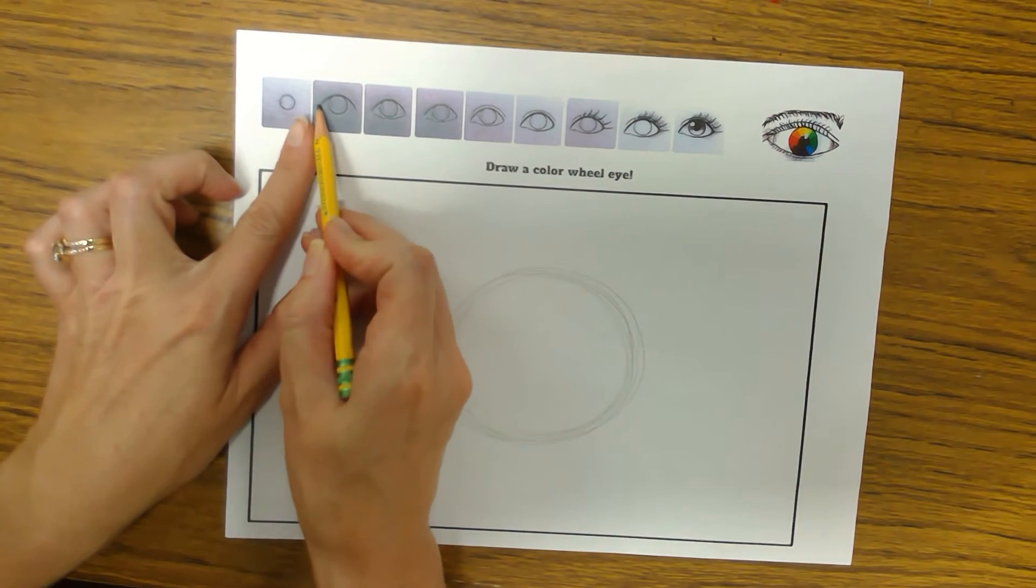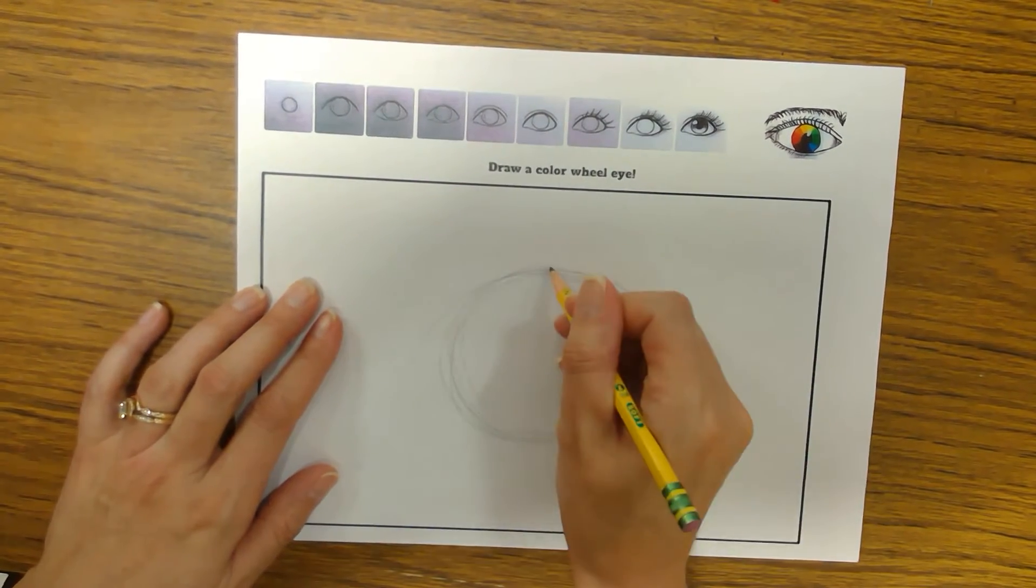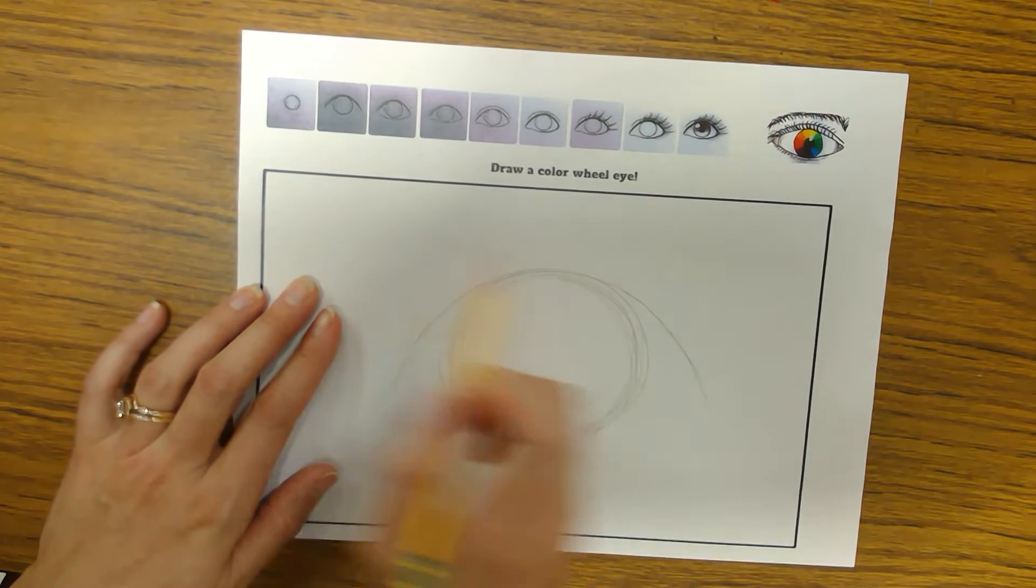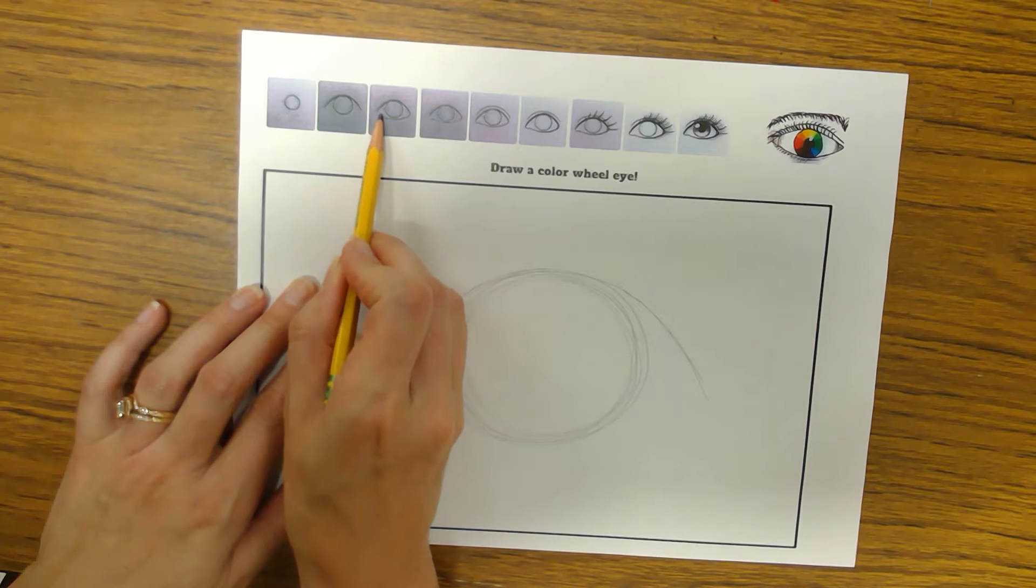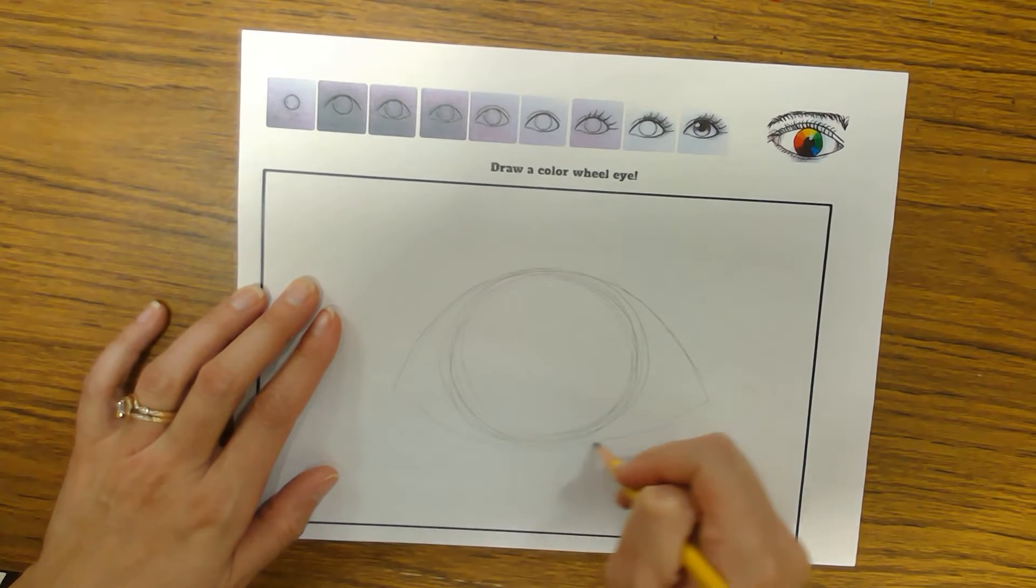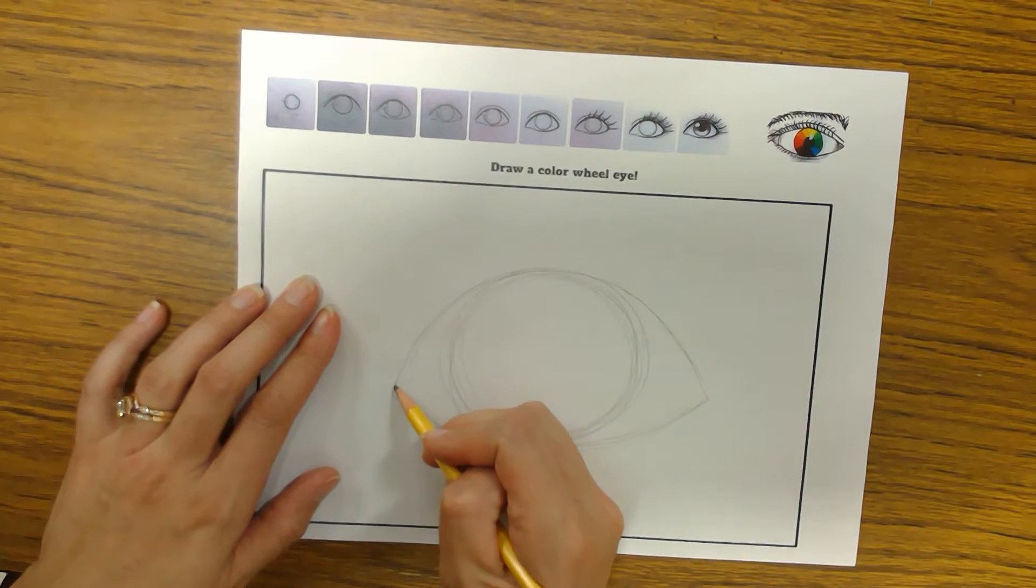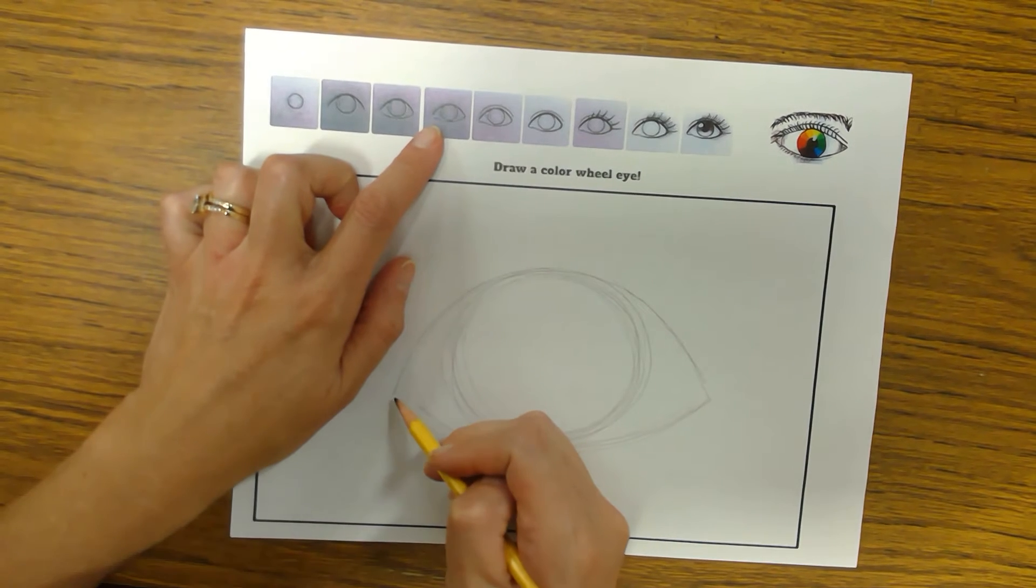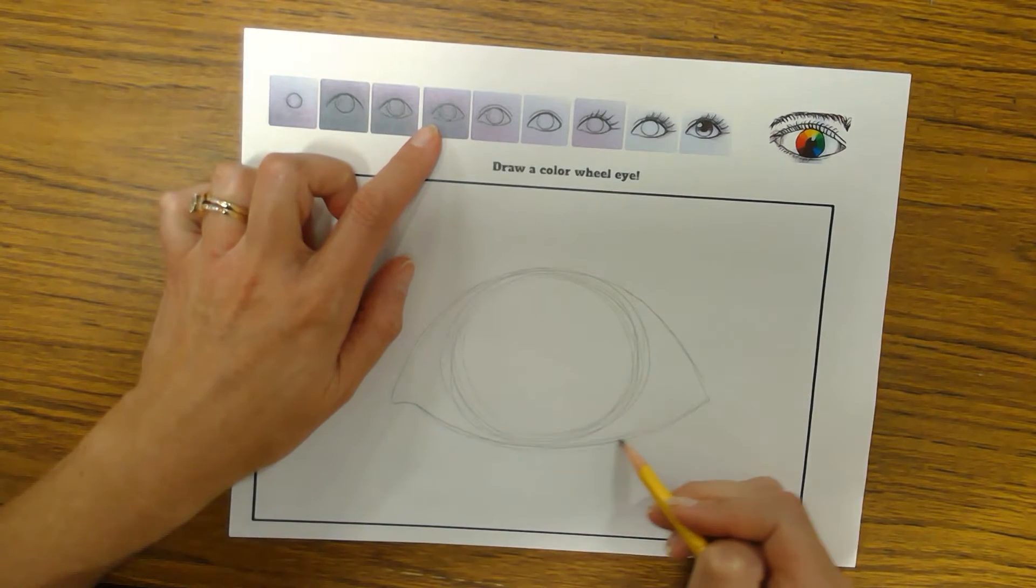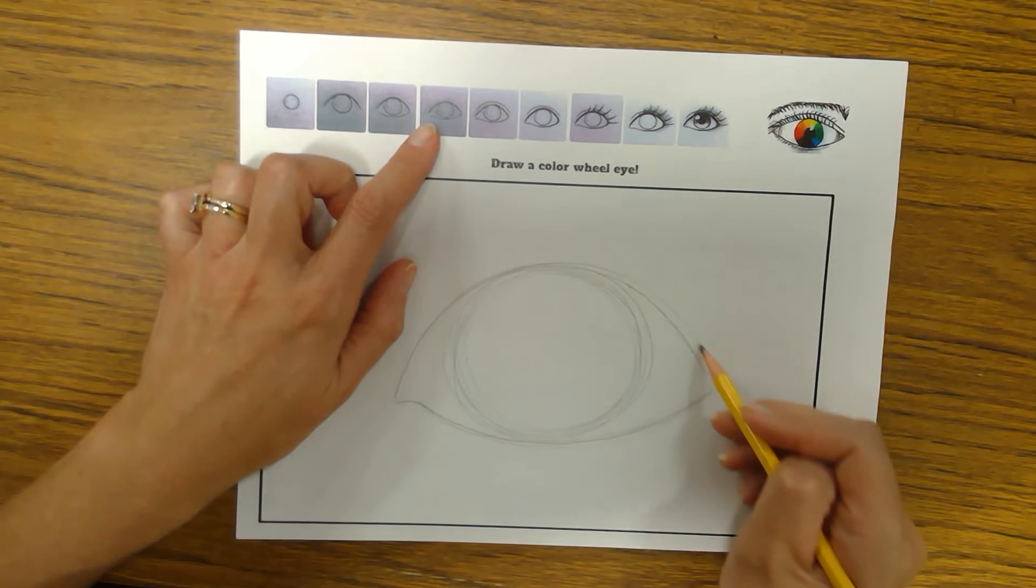Then we're going to add this line up here that looks like a rainbow over the circle, and I'm simply following the squares up here. Then I'm going to add this kind of smiley face line here underneath. Then underneath the smiley face line, I'm on step four already. I'm just going to connect here with this line that kind of zigzags in.